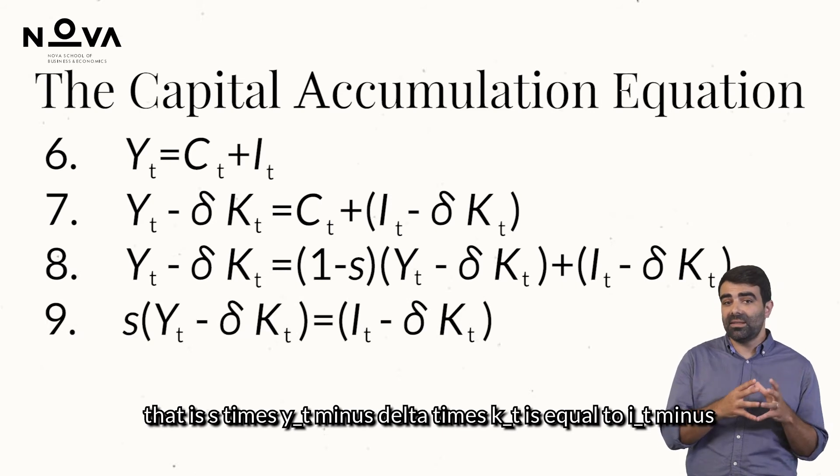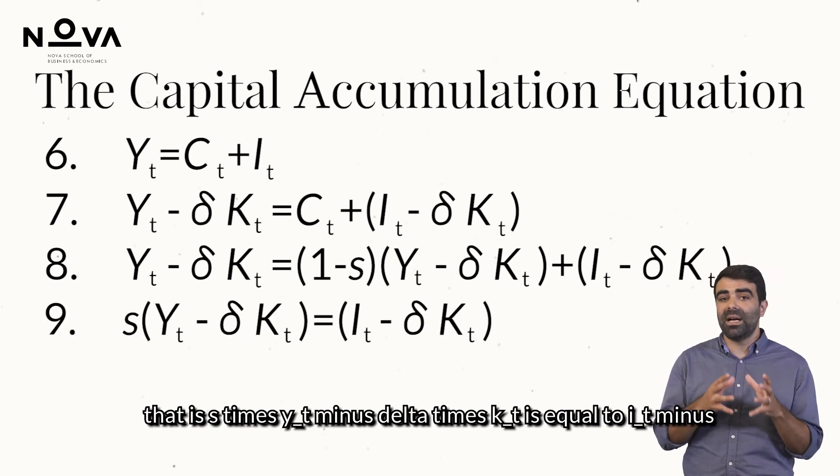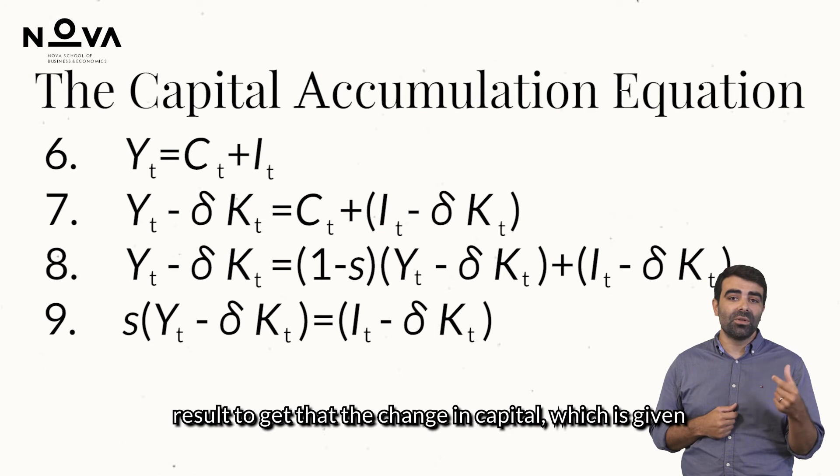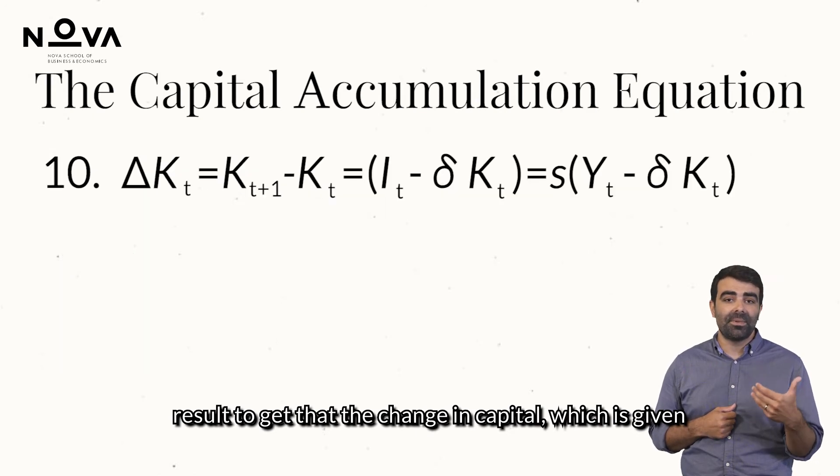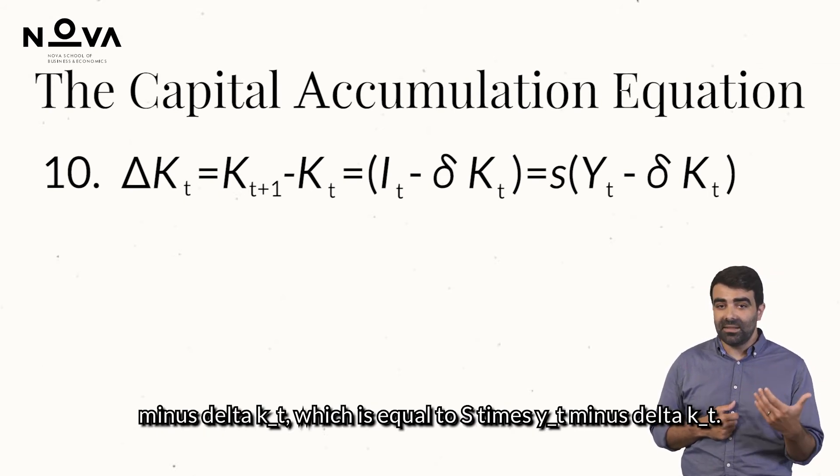We can simplify this and rearrange to show that net savings equals net investment. That is, s times yt minus delta times kt is equal to yt minus delta kt.